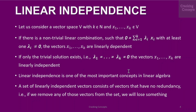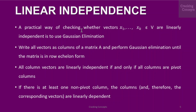Linear independence is one of the most important concepts in linear algebra. Intuitively, a set of linearly independent vectors consists of vectors that have no redundancy — if we remove any of those vectors from the set, we will lose something. A practical way of checking whether the vectors x1, ..., xk are linearly independent is to use Gaussian elimination. Write all the vectors as columns of a matrix A and perform Gaussian elimination until the matrix is in row echelon form. All column vectors are linearly independent if and only if all columns are pivot columns. If there is at least one non-pivot column, the columns and therefore the corresponding vectors are linearly dependent.